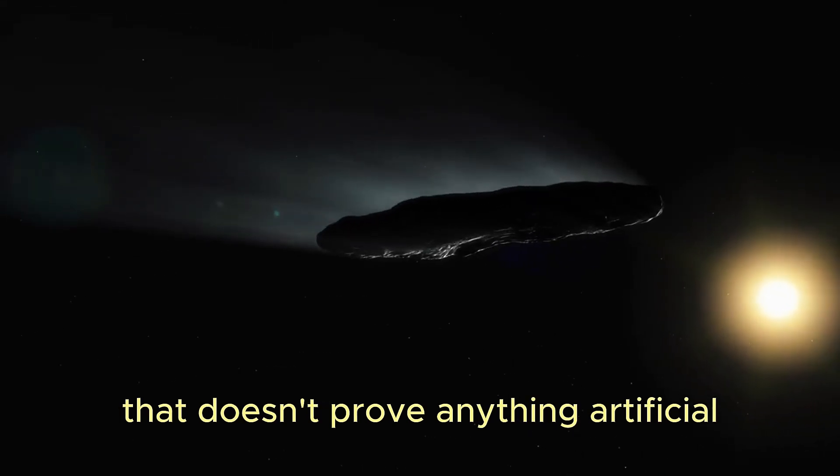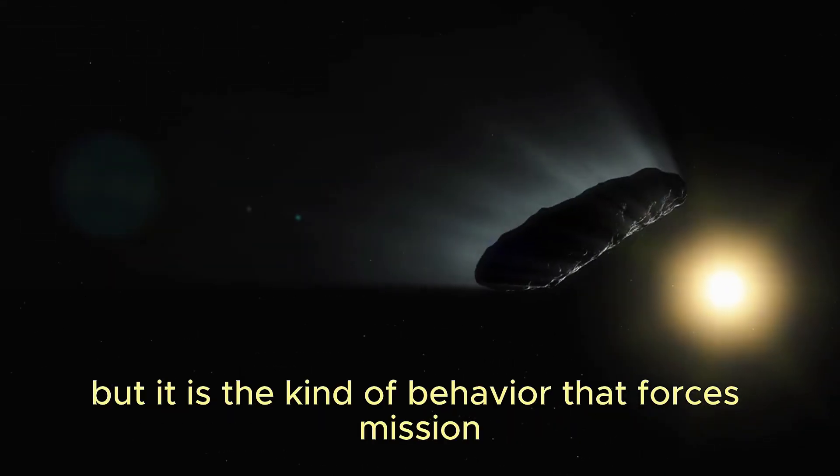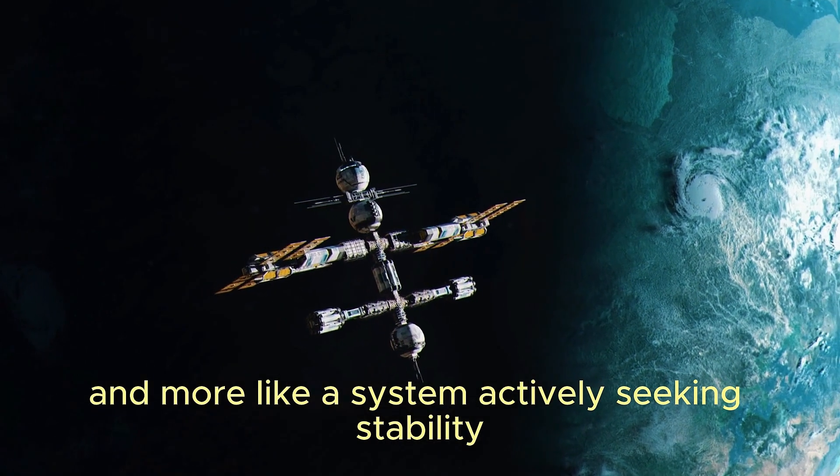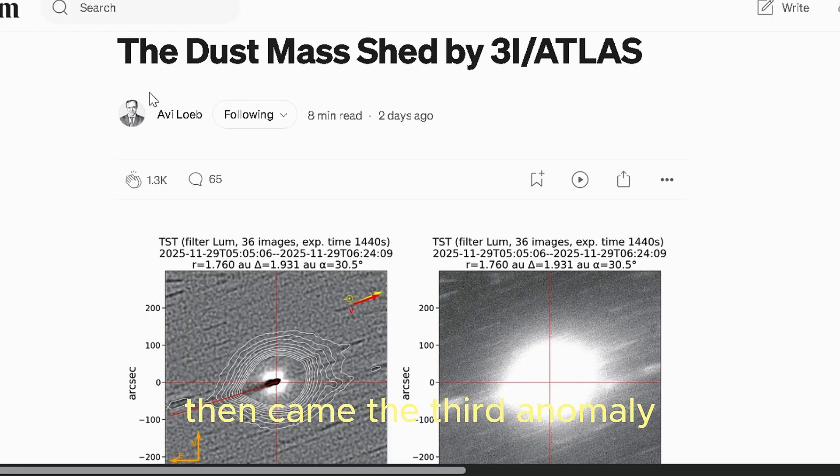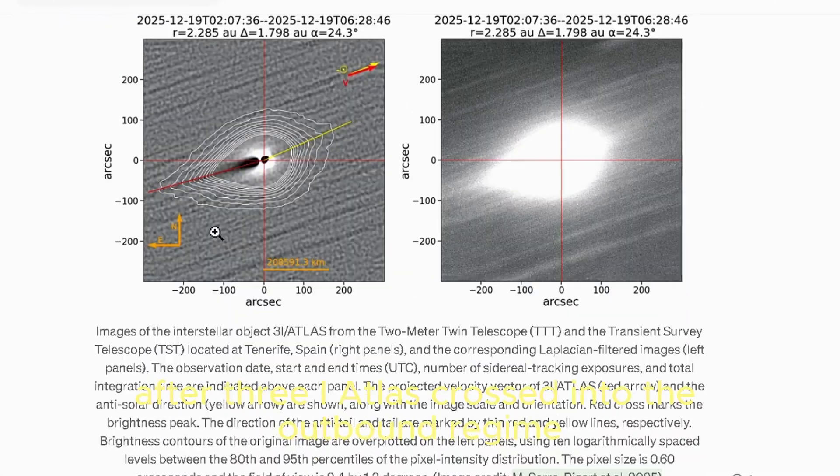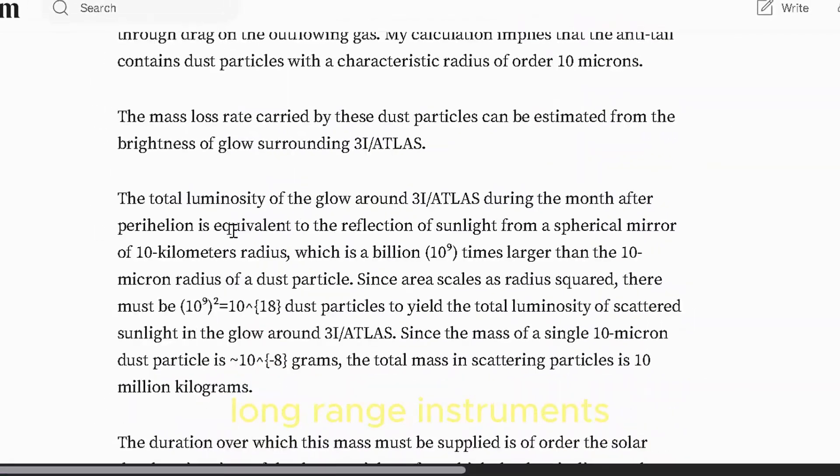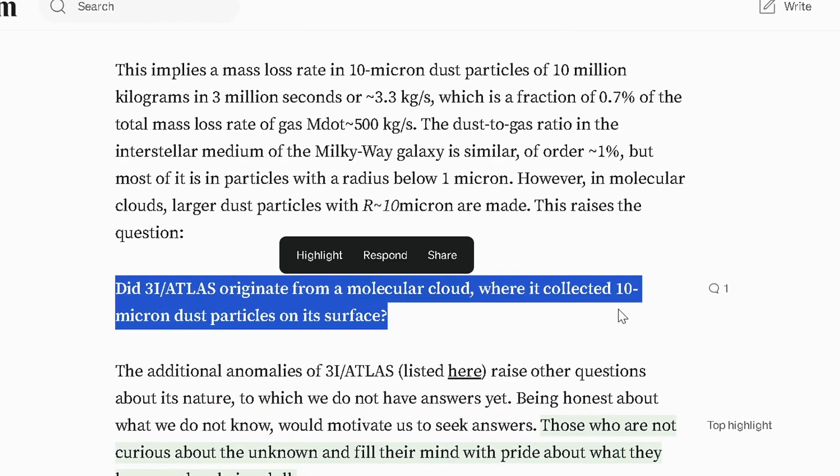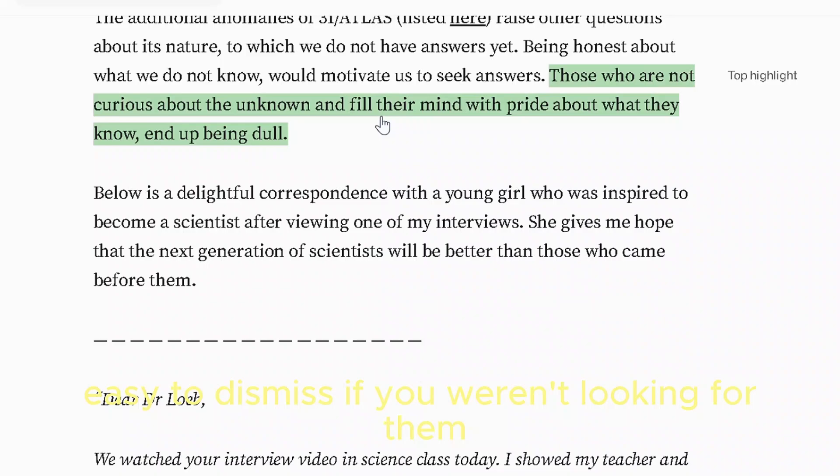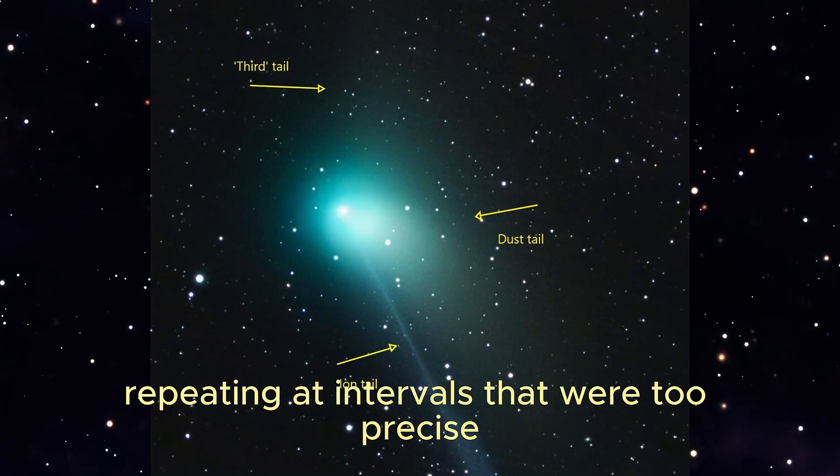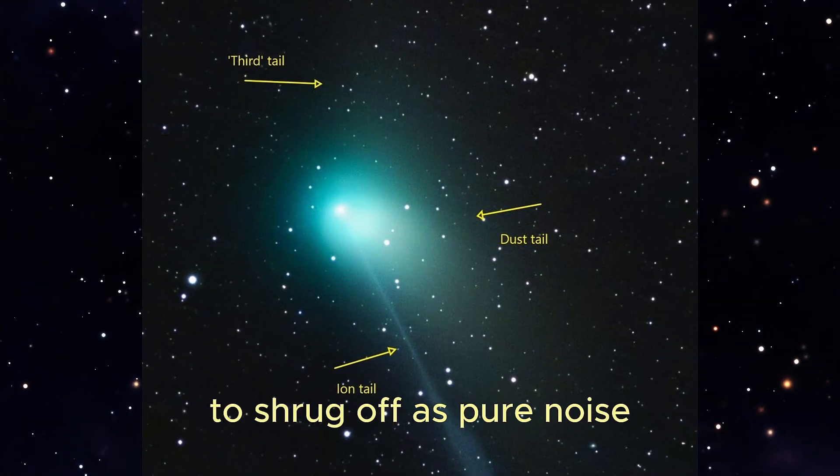That doesn't prove anything artificial, but it is the kind of behavior that forces mission analysts to treat it less like a drifting fragment and more like a system actively seeking stability. Then came the third anomaly, where internal conversations stopped being routine. After 3I Atlas crossed into the outbound regime, long-range instruments began picking up secondary signatures in its surrounding environment. These were weak, transient, easy to dismiss if you weren't looking for them. But they kept appearing.